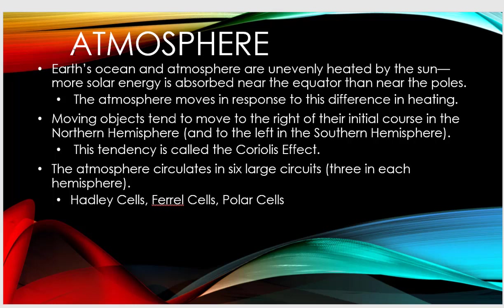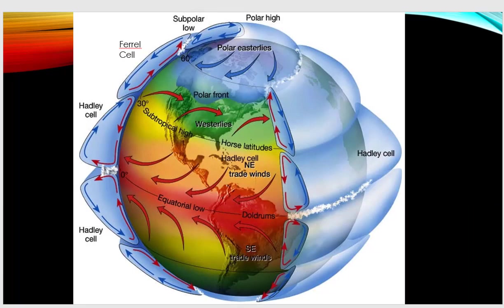Remember, the key thing about the atmosphere is this uneven solar radiation. Uneven heat needs to be moved around, and it's moved around by the atmosphere in these large atmospheric circulation cells. So the atmosphere moves in response to this difference in heating. We talked about the Ferrel cells, the Hadley cells, and the polar cells.